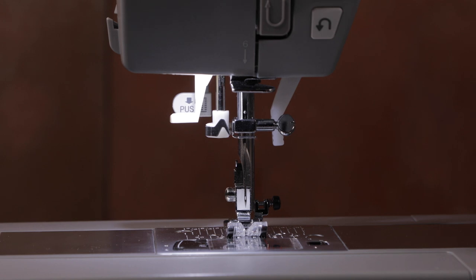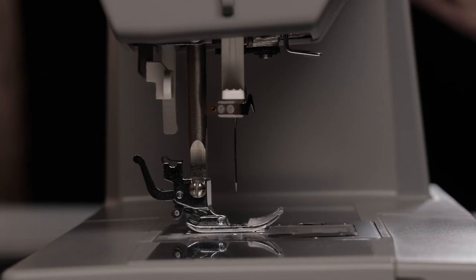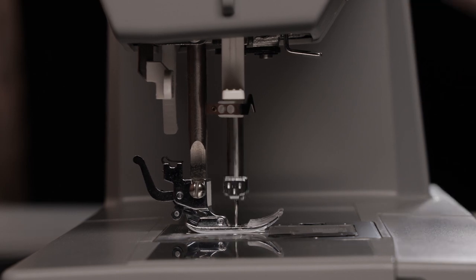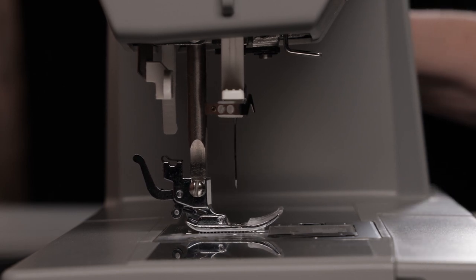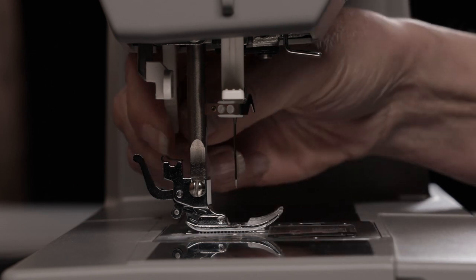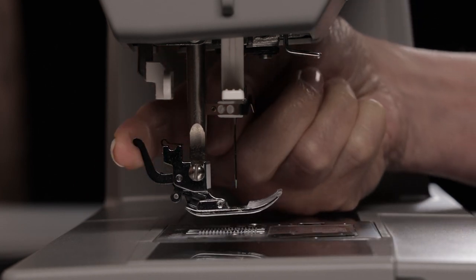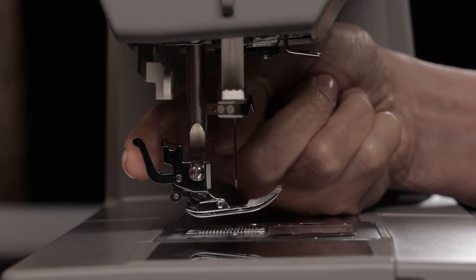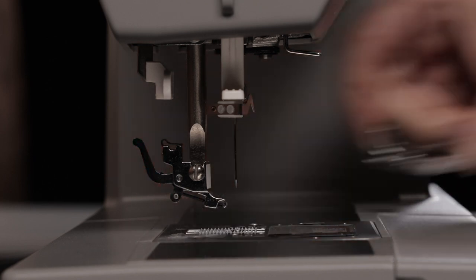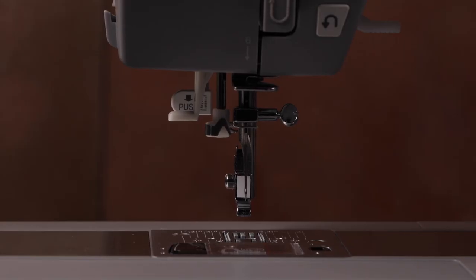To change a needle, first turn off the power to the machine and turn the hand wheel toward you to make sure that the needle is raised to its highest position. Raise the presser foot lifter and press the presser foot release lever at the back to release the presser foot. It's a good idea to place a small piece of paper over the needle plate so that you don't accidentally drop the needle down into the machine.